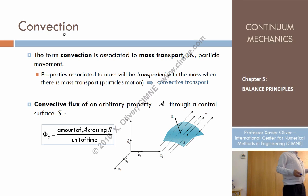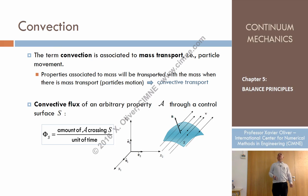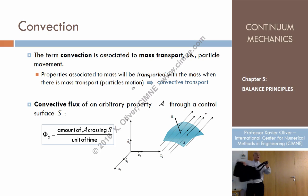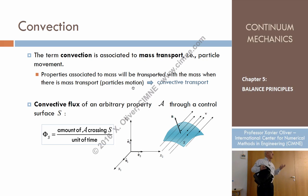Convection is associated to movement — specifically, to transport of mass due to movement. Convection is mass transport, and whenever you imagine particles, think of them as carrying a bag with properties: density, velocity, stresses, strength.